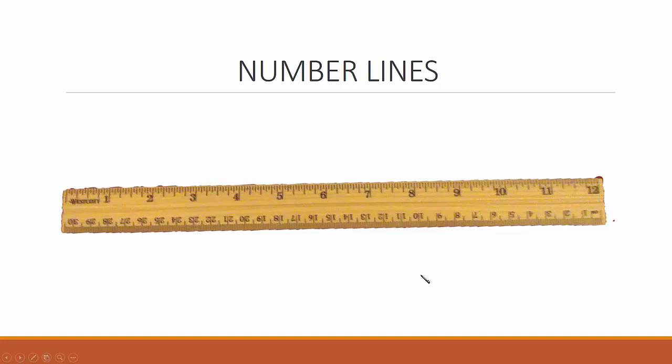We can also show how numbers relate to each other, and one way to do this is a number line. It's like a map of numbers. The same idea is on a ruler, numbers in order.